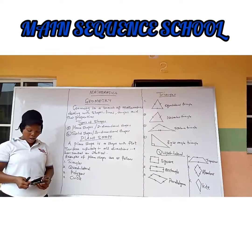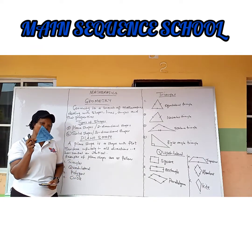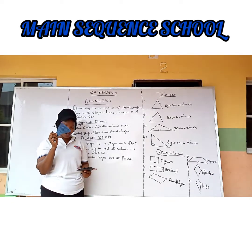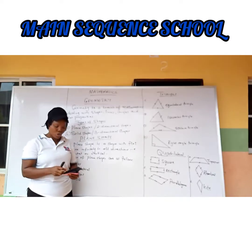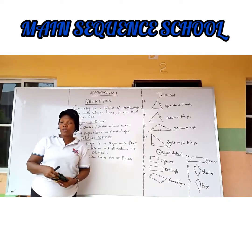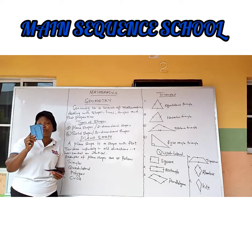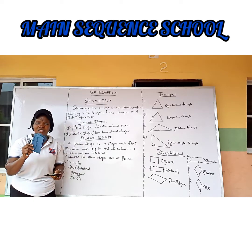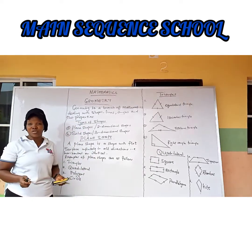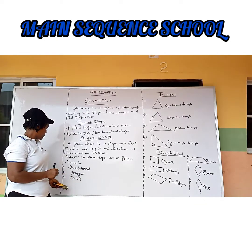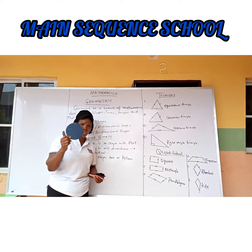Examples of plane shapes: we have a triangle — a triangle has three sides, and any shape with three sides is called a triangle. Secondly, we have a quadrilateral shape — shapes with four sides. Thirdly, we have a polygon. And lastly, we have a circle, which is round in shape.